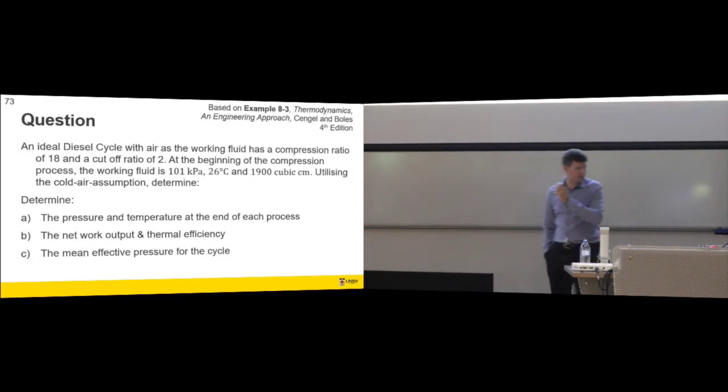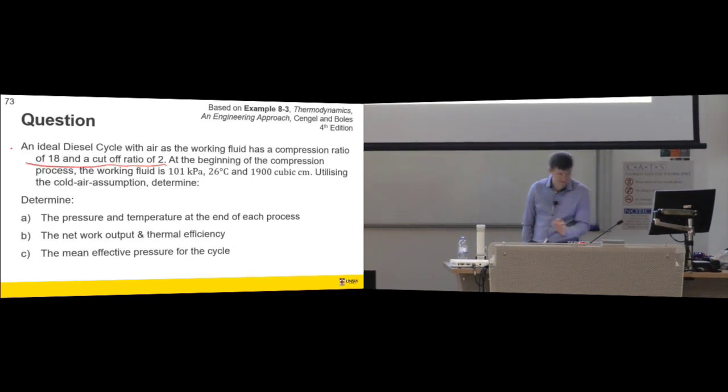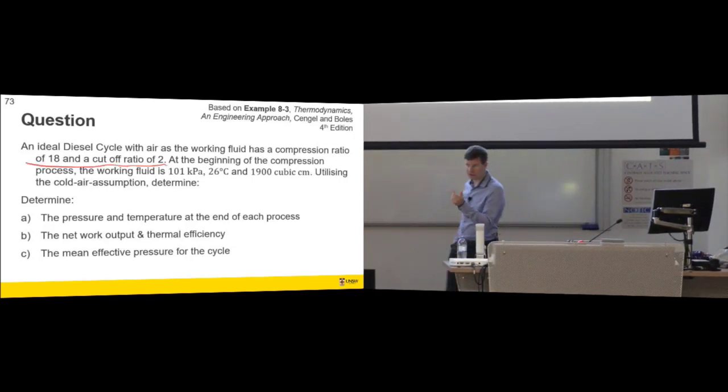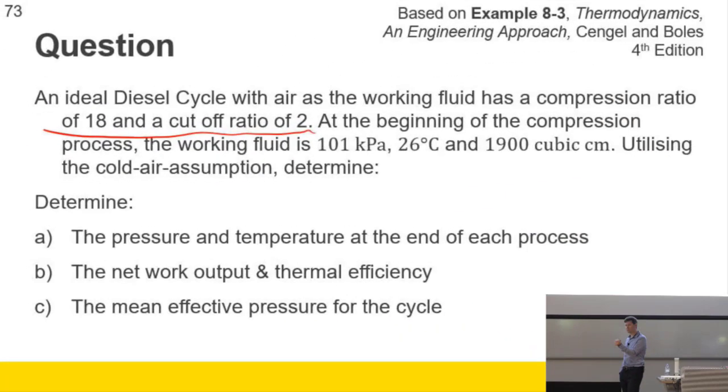So what have we got? We're given a cut-off ratio. A problem you're going to have with your assignment for the auto cycle and for the diesel cycle, if you choose those devices, is not the compression ratio, that's listed. That's easy to find. What's the cut-off ratio, or how much fuel is burnt in each cycle? So just a heads up. That's something you'll need to work out, insure it, calculate.